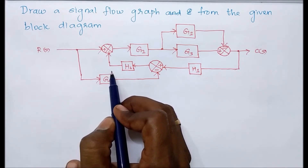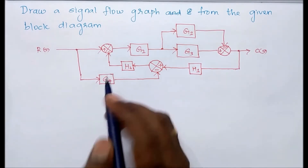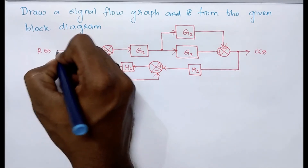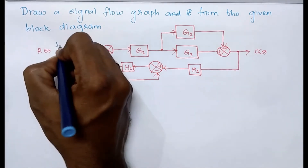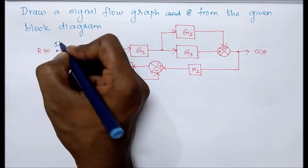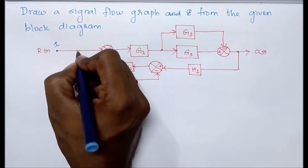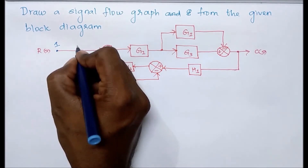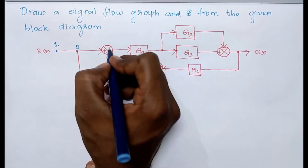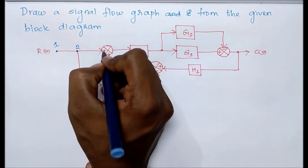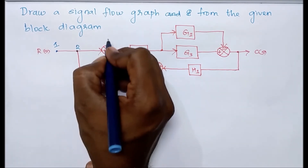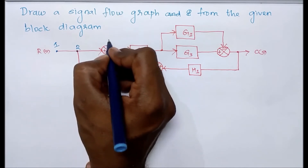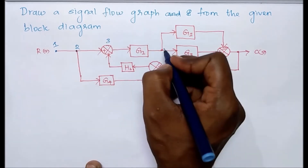In the first step, we have to mark the number of node points. We can consider the input as starting node one. At the next point, two branches are connecting, so we consider this as node two. At the summing point, there are three branches — two incoming and one outgoing — so we consider this as node three.